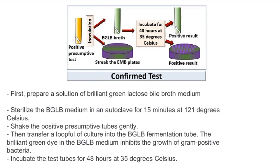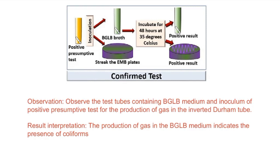After doing that, we incubate and observe. The production of gas is the key observation in this step — gas production in the Durham tube confirms the result.